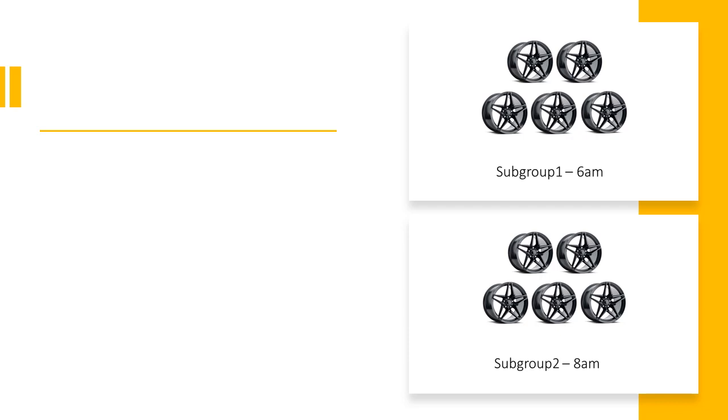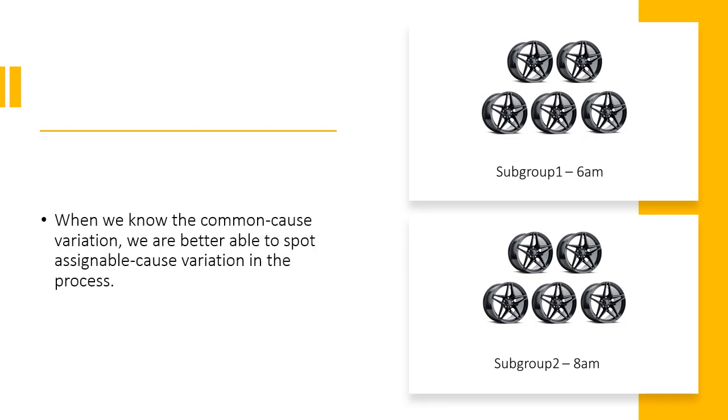To collect rational subgroups at the car wheel manufacturing plant, we sample successive wheels that have been manufactured using the same batch of raw material. If these subgroups are collected properly, they contain only variation that is naturally occurring in the process. By identifying the common cause variation, we are better able to spot the presence of something unusual in the process.